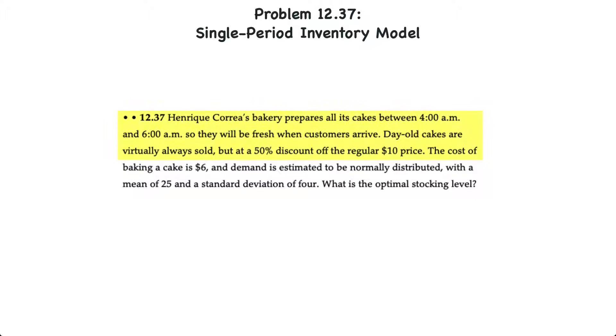Here we have a bakery that prepares its cakes between 4 and 6 a.m. so they'll be fresh when their customers arrive. Day-old cakes are pretty much always sold but at a 50% discount off the regular price of $10. The cost of baking a cake is $6 and the estimated demand is normally distributed with a mean of 25 and standard deviation of 4. The requirement is to determine the optimal stocking level.